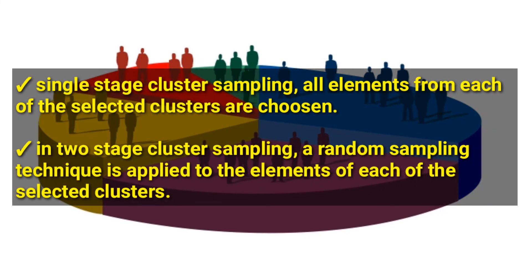Within cluster sampling we have single-stage cluster sampling and two-stage cluster sampling. In single-stage cluster sampling, all elements from the selected clusters are used. In two-stage cluster sampling, a random sampling technique is applied to all elements from each of the selected clusters.